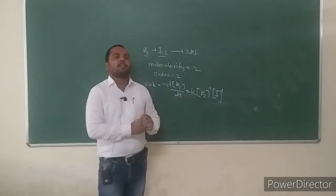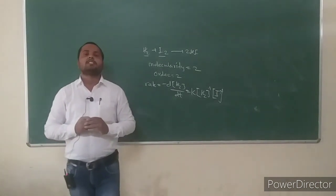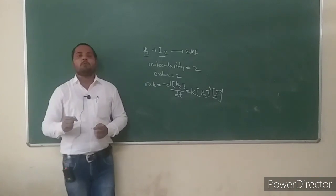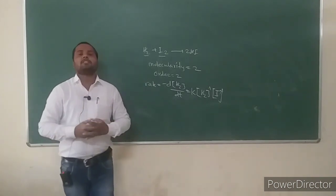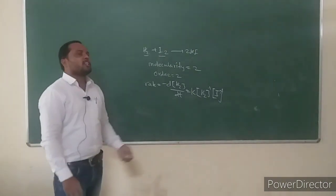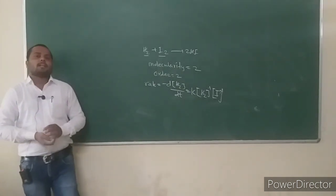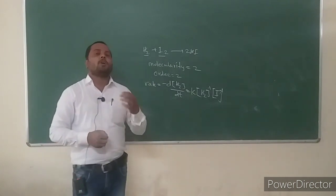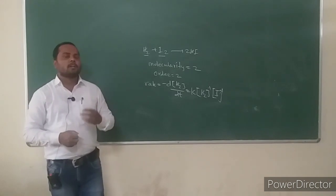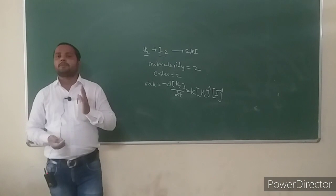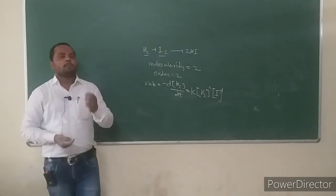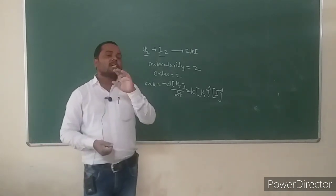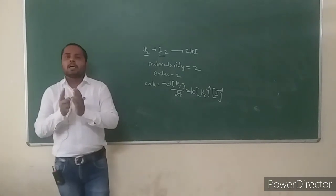In summary: molecularity of a chemical reaction is a theoretical quantity based on the mechanism. It is defined as the number of reactant molecules involved in the elementary reaction. Molecularity can never be zero, because at least one reactant must be involved. Unlike order of reaction, molecularity cannot be zero or a fractional number. Also, molecularity does not depend on experimental reaction conditions.